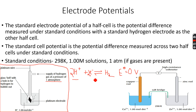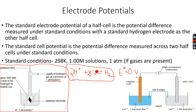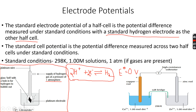A reversible reaction exists: hydrogen ions keep forming H₂ gas on the platinum electrode, and H₂ molecules keep losing electrons to form H⁺ ions. Because the interchange between H⁺ and H₂ is so fast, this electrode is given a value of E° = 0 V. That is why the standard hydrogen electrode is taken as the reference half-cell.